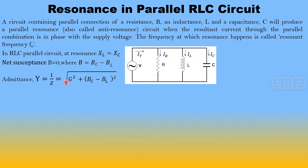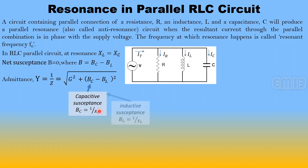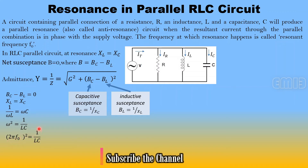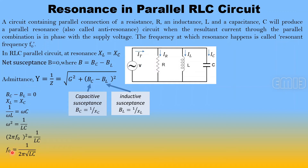Admittance Y = 1/Z = √(G² + (BC − BL)²). At resonance, BC − BL = 0, so Y = G, meaning admittance equals conductance. Setting XL = XC: 1/(ωL) = ωC, giving ω² = 1/LC, so (2πf0)² = 1/LC, therefore resonant frequency f0 = 1/(2π√(LC)). At resonance, impedance equals R, so the minimum current drawn from the circuit is V/R.